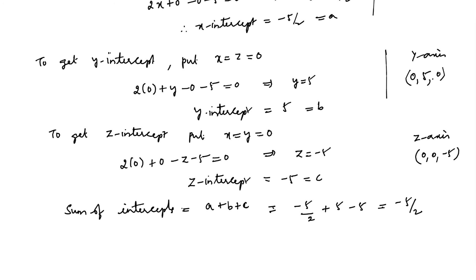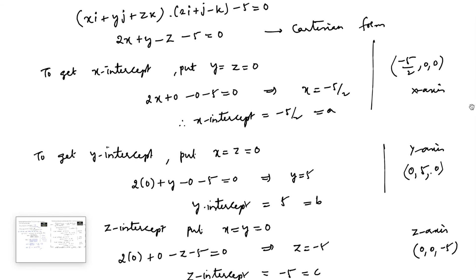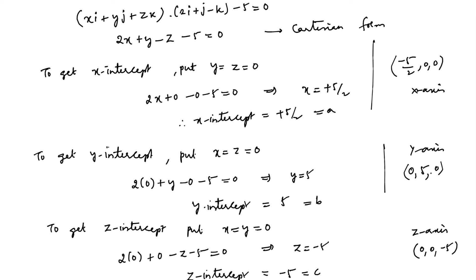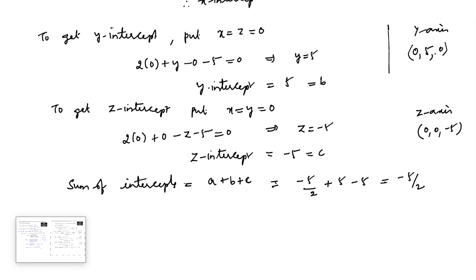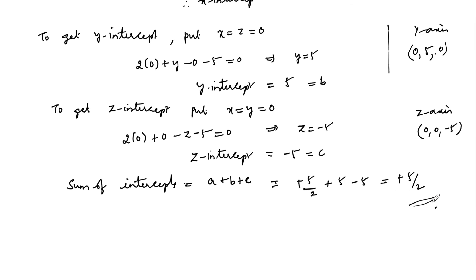Correction: the x-intercept is +5/2 (not -5/2). So the sum of intercepts is a + b + c = 5/2 + 5 + (-5) = 5/2. Therefore, the sum of the intercepts is +5/2.